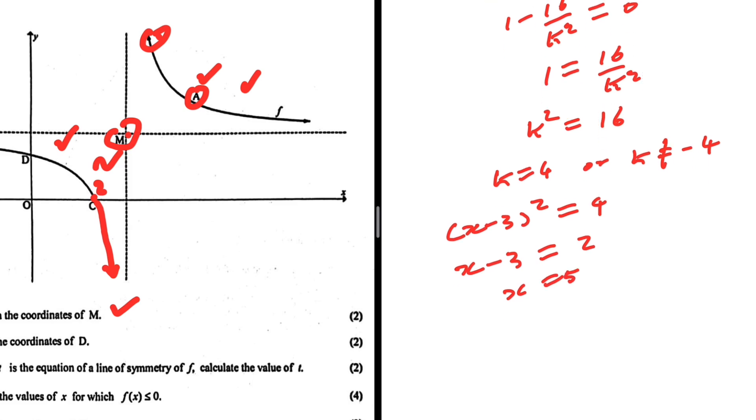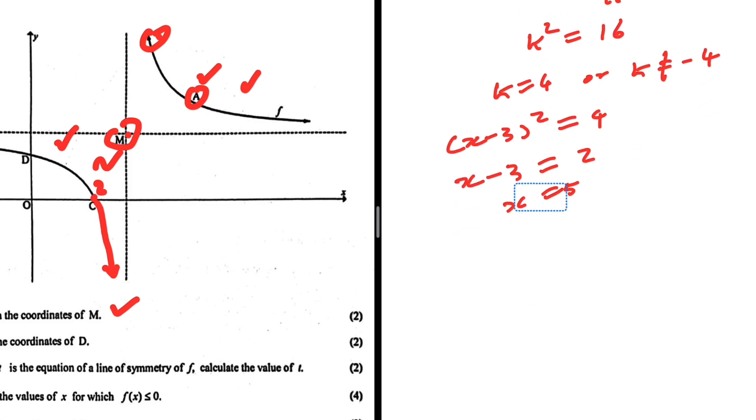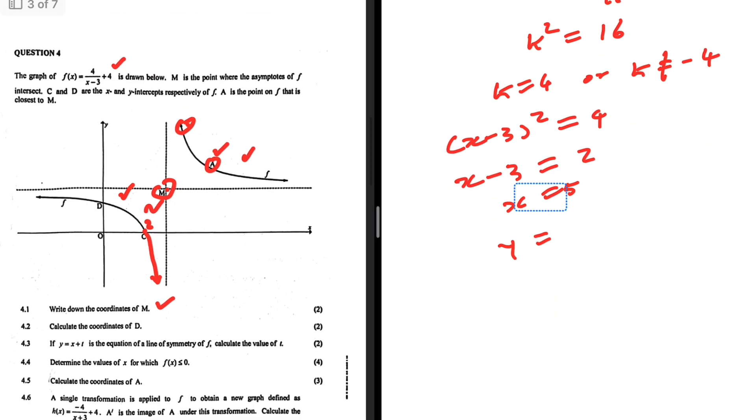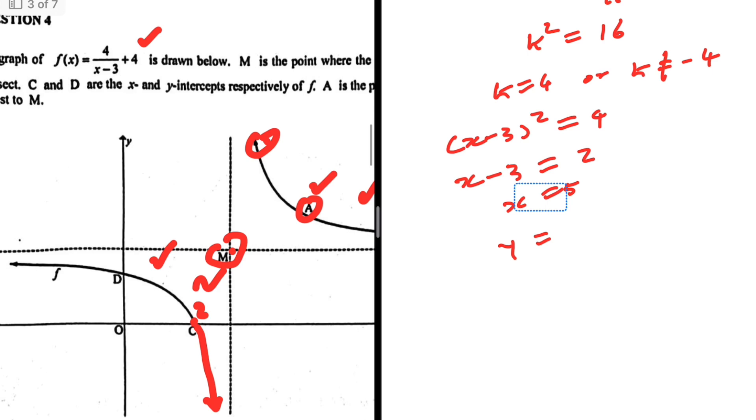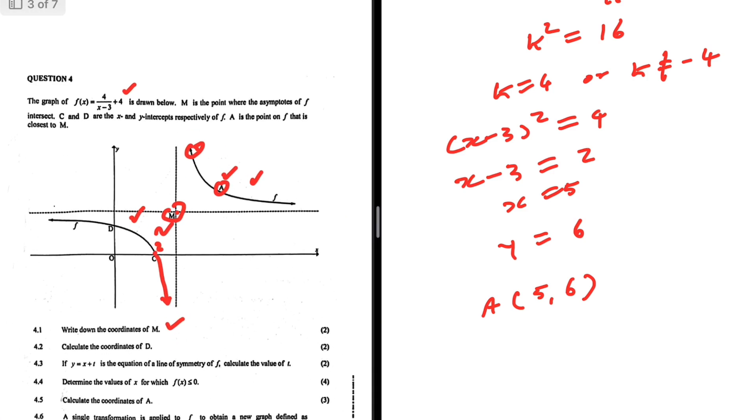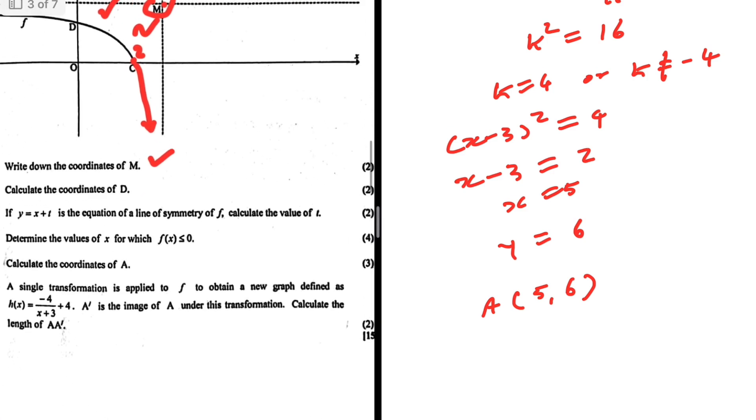So if x equals 5, what is the value of y? Y equals, so we have 4 over 5 minus 3 plus 4, which equals 6. So the coordinates of A is 5 and 6. We don't have to actually calculate the distance itself, so we can leave that there.